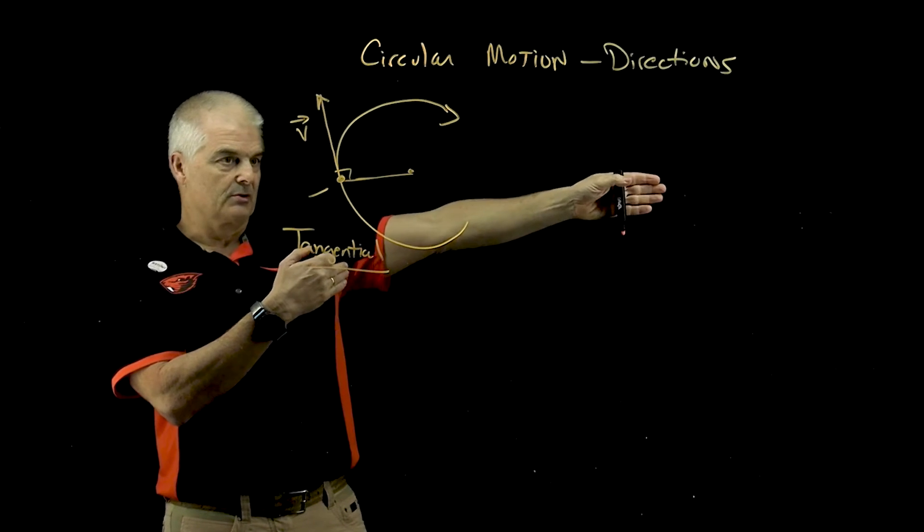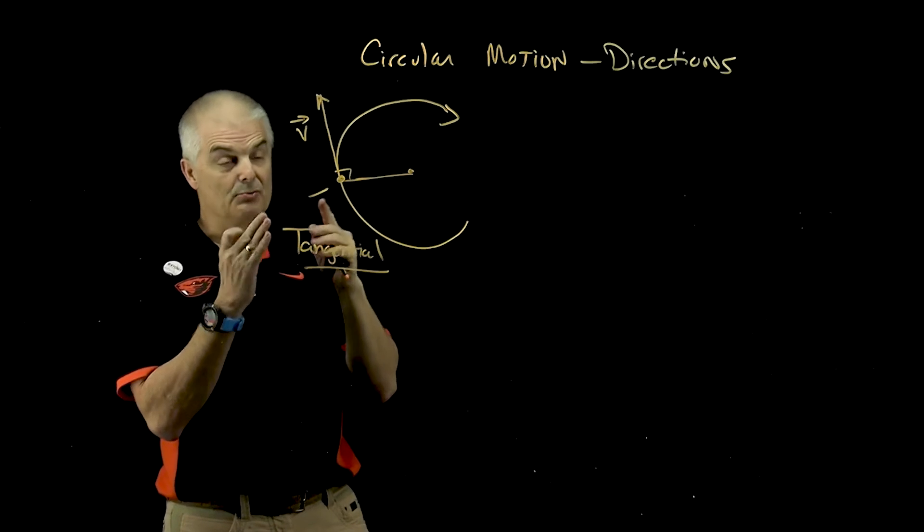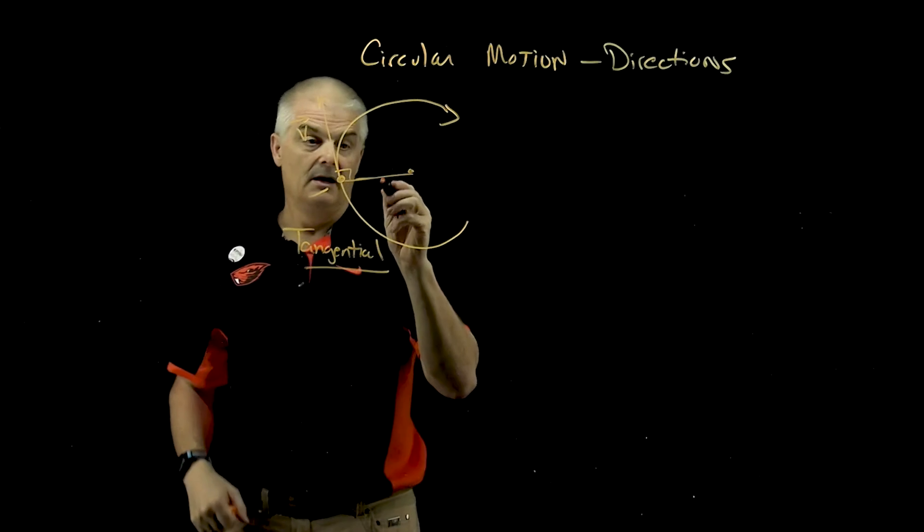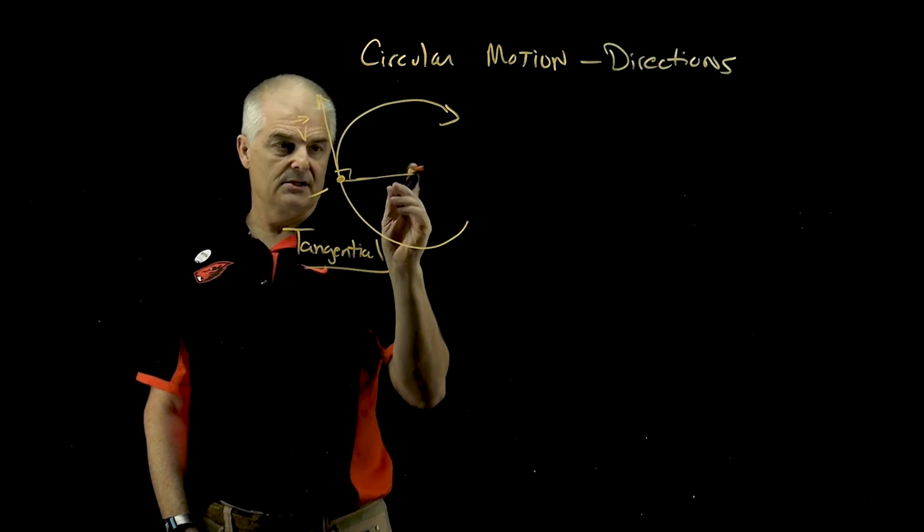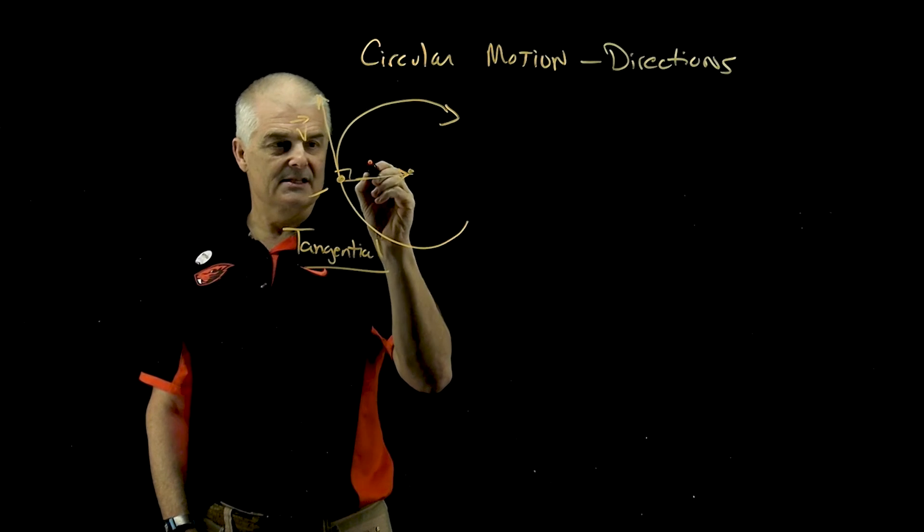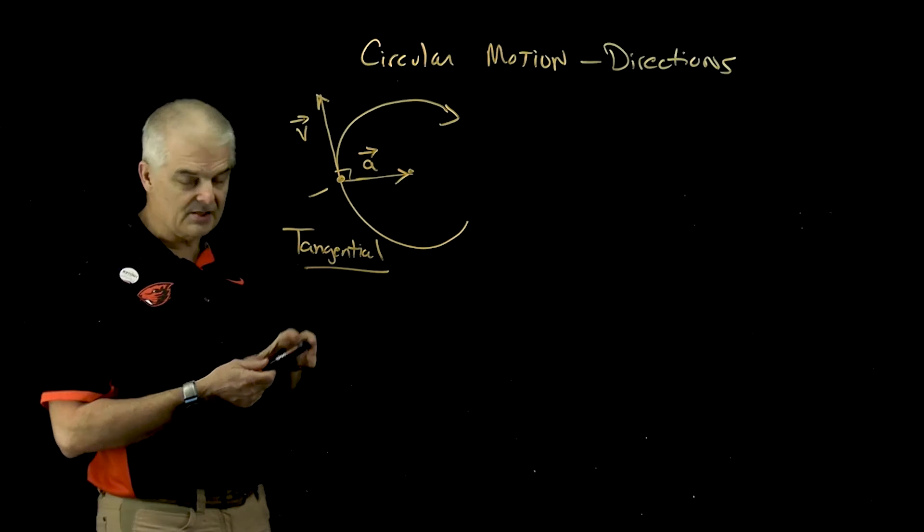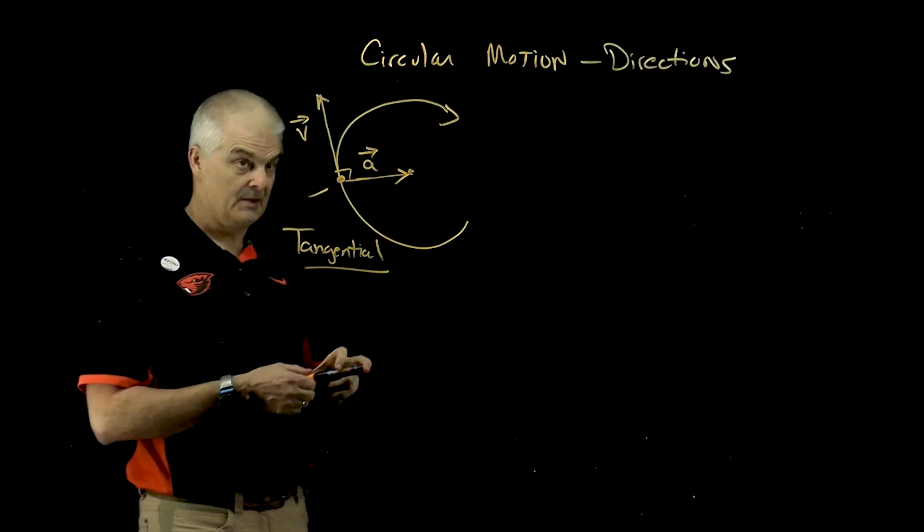90 degrees from the circle. But because you're moving in a circle, and your direction is changing constantly, that constant directional change means that the acceleration is always pointed towards the center of the circle.